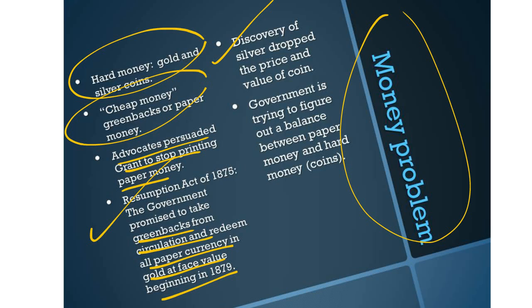The discovery of silver had dropped the price and value of coins. So during this time period, the government was really trying to figure out a balance between paper money and hard money, which was coins.